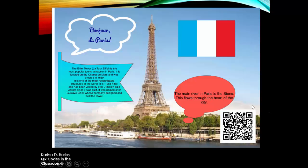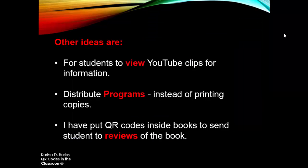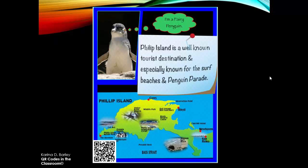Here are some examples of things we could link to. Here is a project I created on Paris using Strip Designer, where I used the QR code to link the Strip Designer file to Dropbox so it was easily accessible for my students — or students could do this for their teachers. Other ideas: students can view YouTube clips for information. During a class concert, activity, or art show you can distribute programs — instead of printing multiple copies and wasting paper, a QR code could link to the event details. I've also put QR codes inside books to send students to reviews of the book.